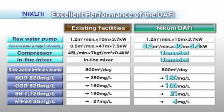The Nikuni KTM unit features a compact pressure water pump and eliminates the need for an air compressor, in-line mixer, and dissolution tank. Facilities that have adapted it as a replacement for conventional systems have been able to save energy.